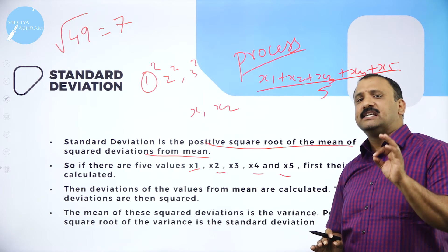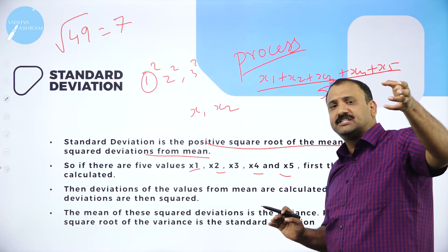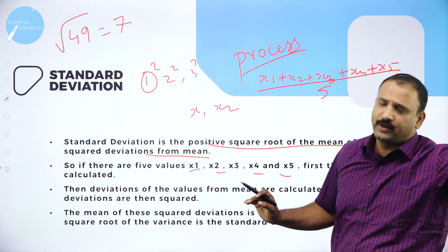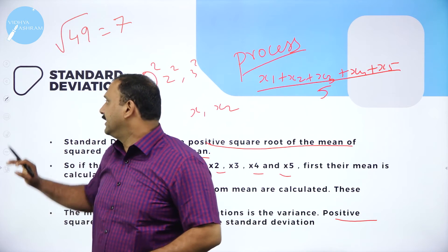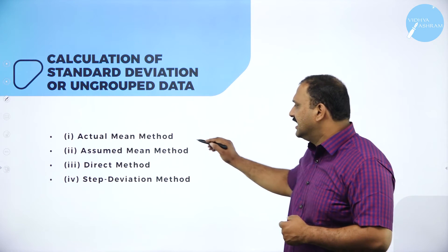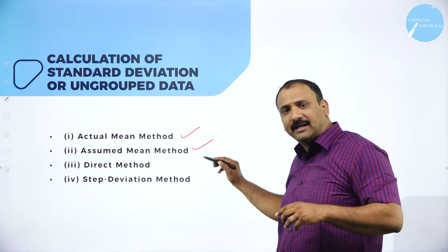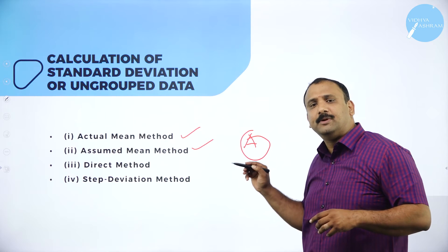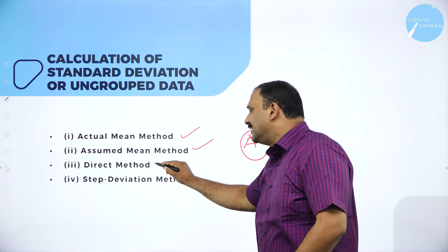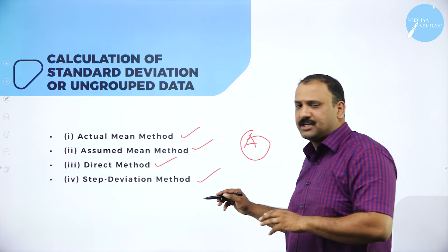It is a very simple and easy method, and also useful from a scoring perspective. All you have to do is find the mean, square out the deviations, and from the variance calculate the standard deviation. For ungrouped data, we have several methods: the actual mean method using arithmetic mean, the assumed mean method using an assumed value A where we assume certain values and deviate, the direct method, and the step deviation method.